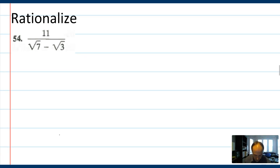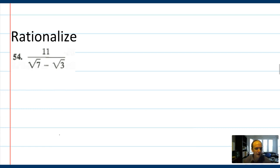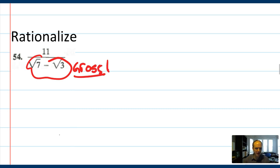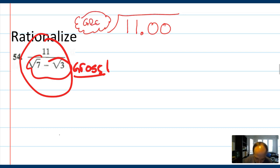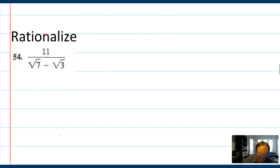Rationalizing a denominator. Back in the old days, before you had a calculator, if you wanted to find the decimal for a fraction with a square root in the denominator, you'd be stuck doing long division. In this particular one you'd have 11 on the inside — we can do long division with 11. But on the outside you'd have whatever gross thing the root is. Basically no one liked to do this, so we needed a different trick. When you have just one term outside — like root 7 or root 3 — you multiply by that root over that root. But here we need something called the conjugate.